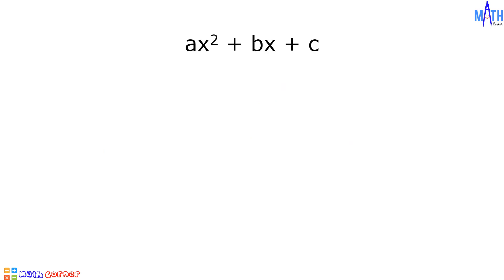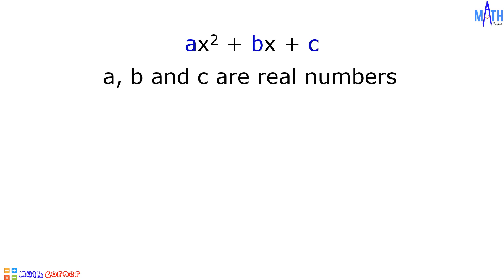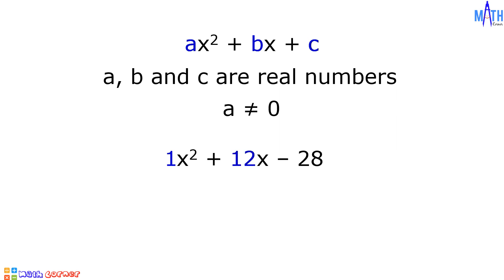Let us consider a quadratic trinomial of the form ax squared plus bx plus c, where a, b, and c are real numbers and a is not equal to zero. An example of a quadratic trinomial is x squared plus 12x minus 28, where a is equal to 1, b is equal to 12, and c is equal to negative 28. The factors of this trinomial are x plus 14 and x minus 2.